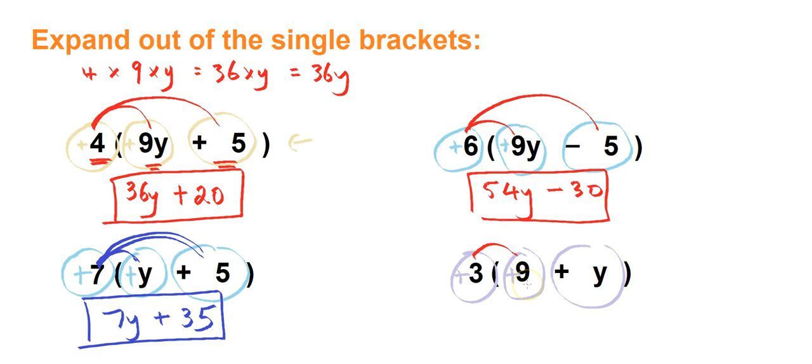3 times 9. That's positive 3 times positive 9, that's positive 27. And then 3 times y. Now remember,